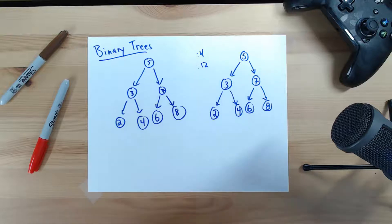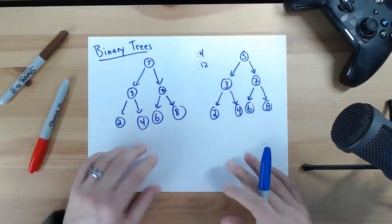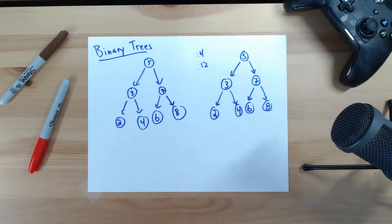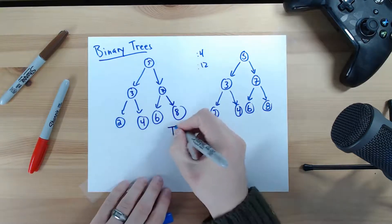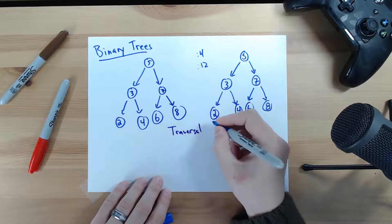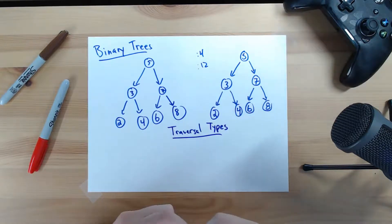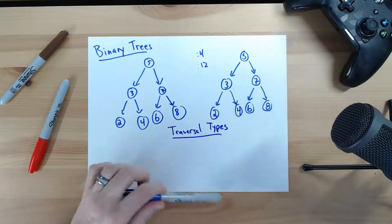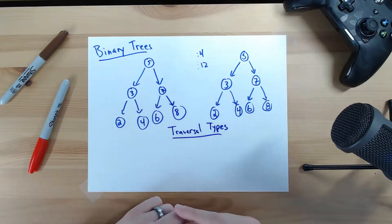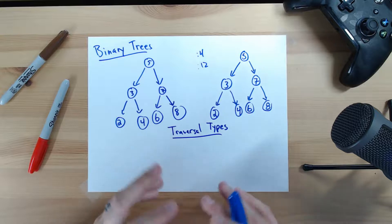In this video I'd like to talk about three types of traversal over a binary tree data structure like this. There are three types of traversal: the first one's called in-order, the next one's called post-order, and the last one is called pre-order.